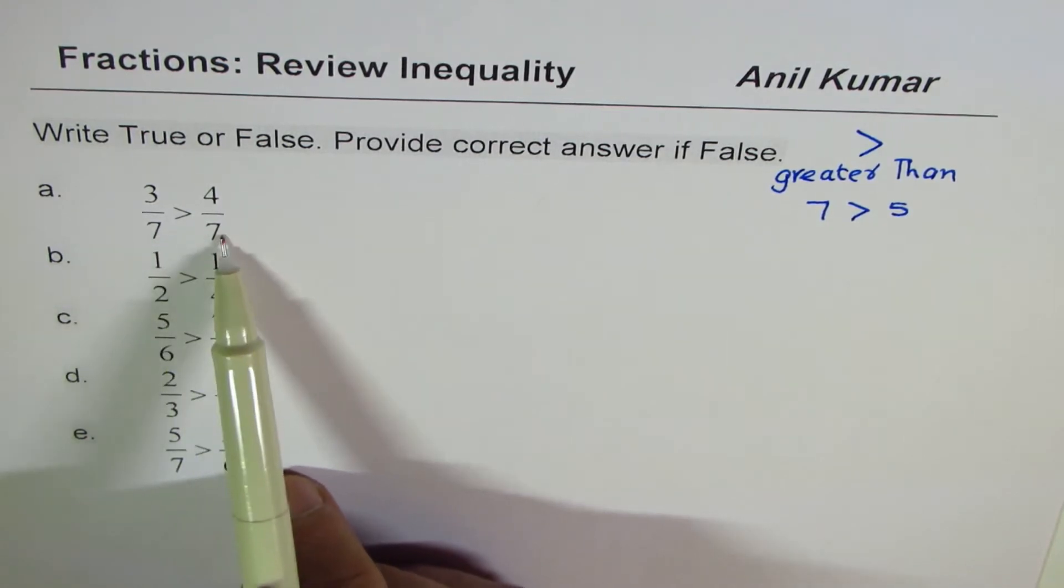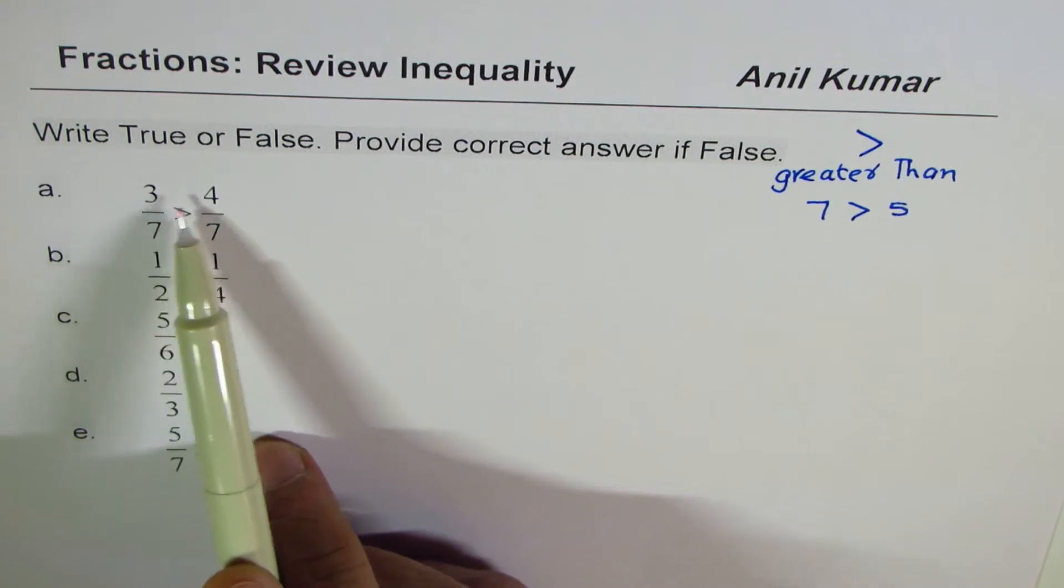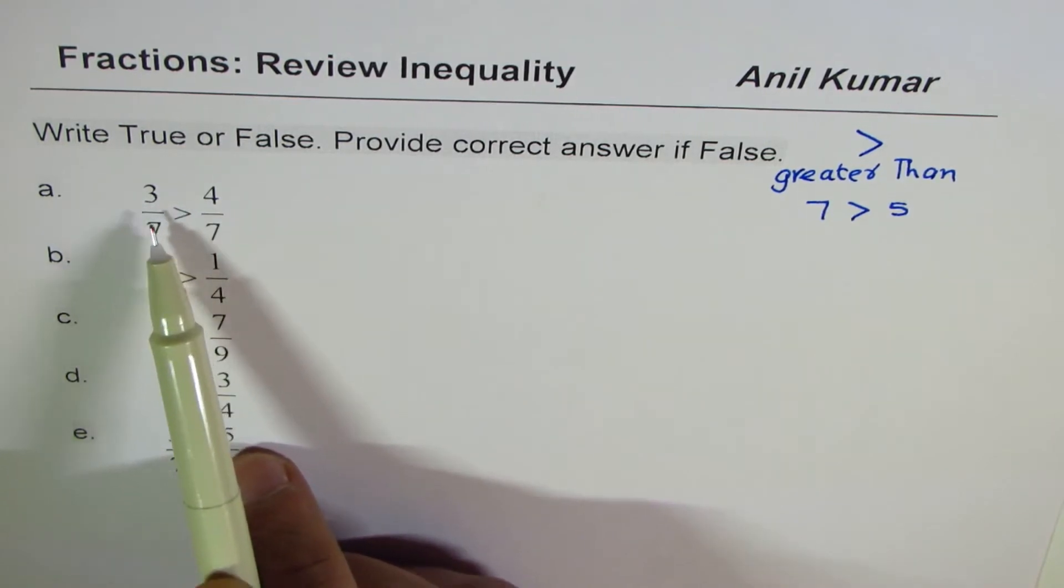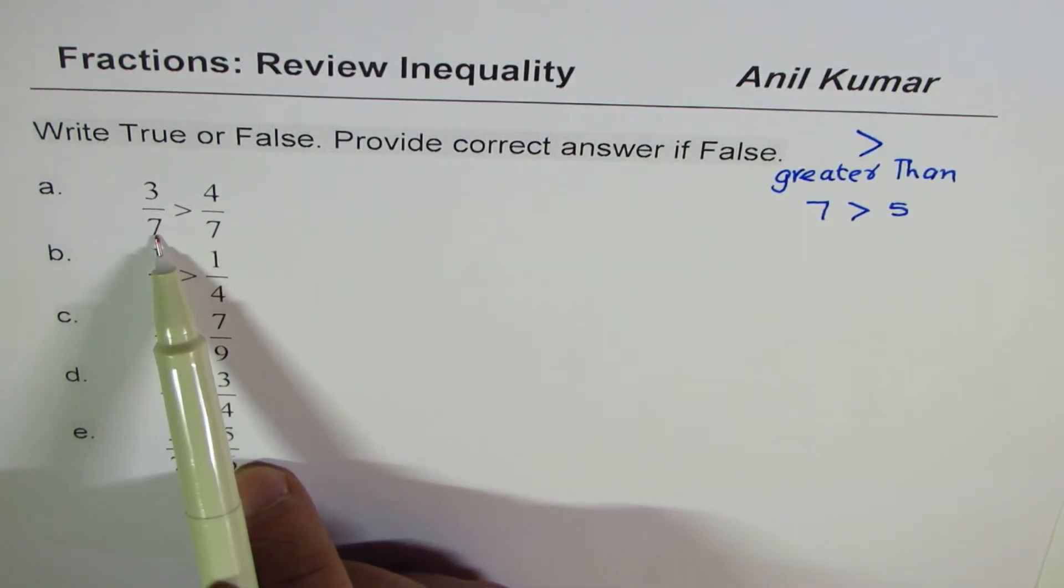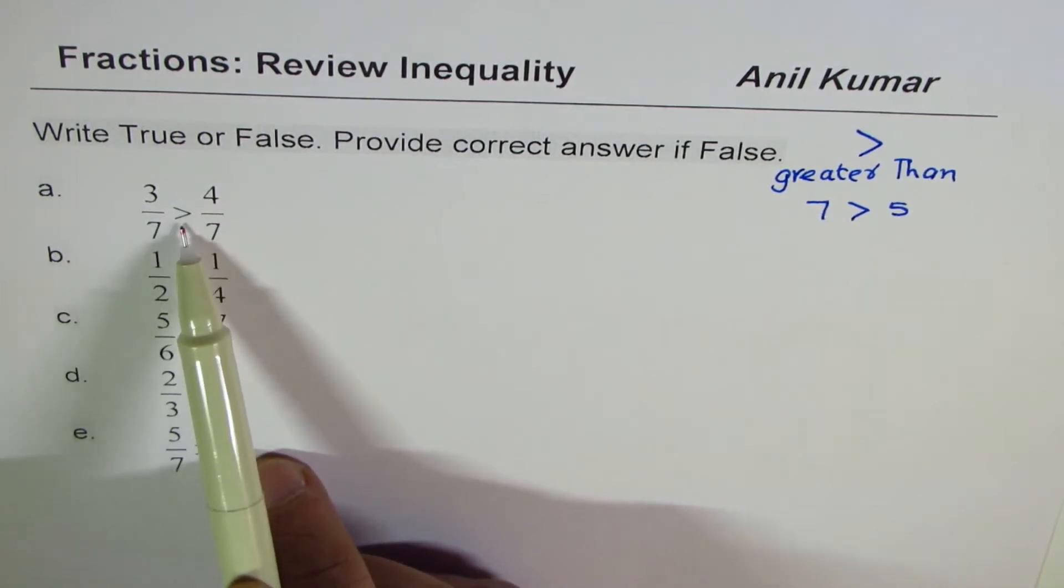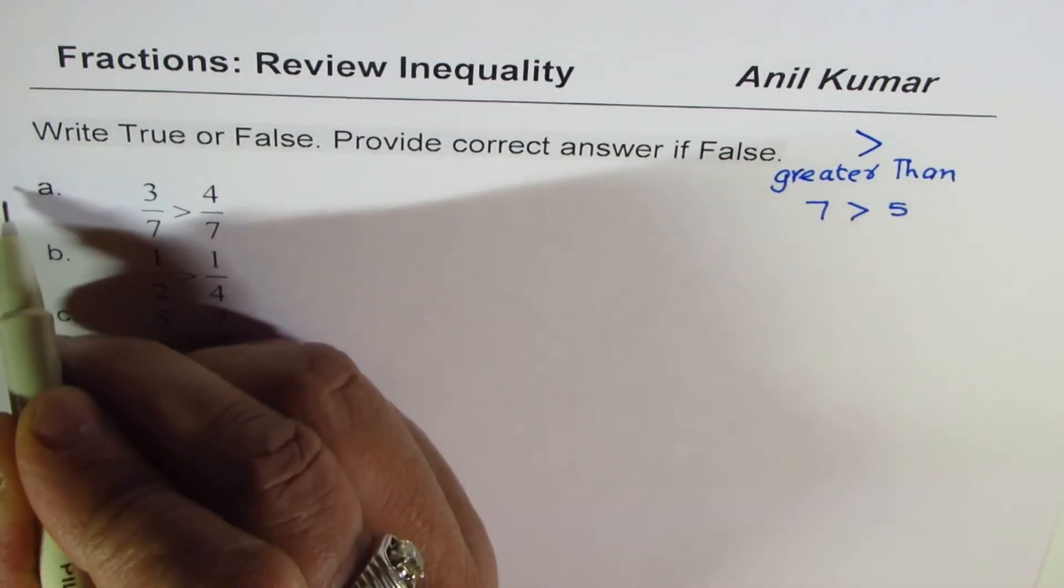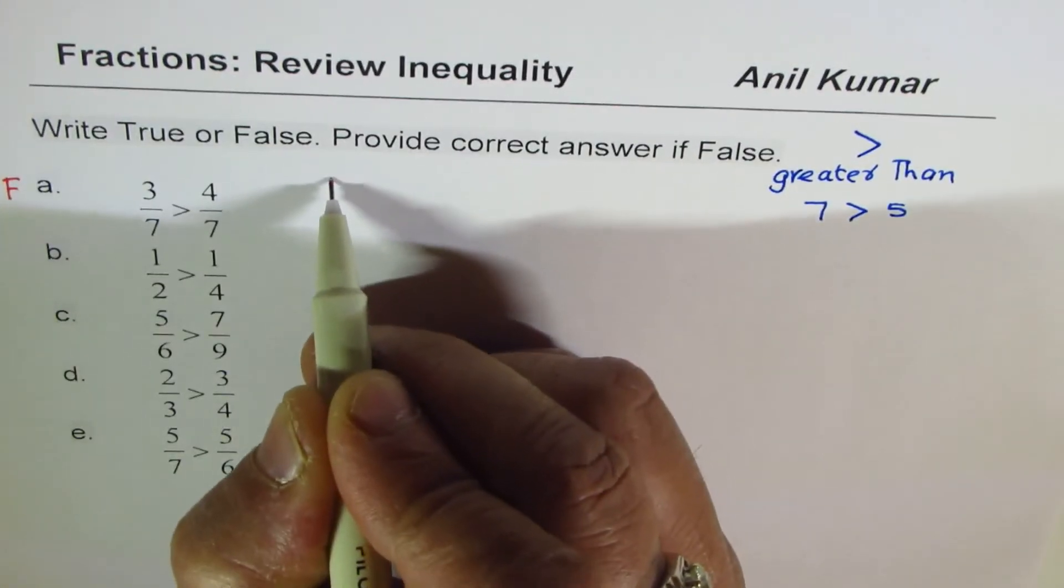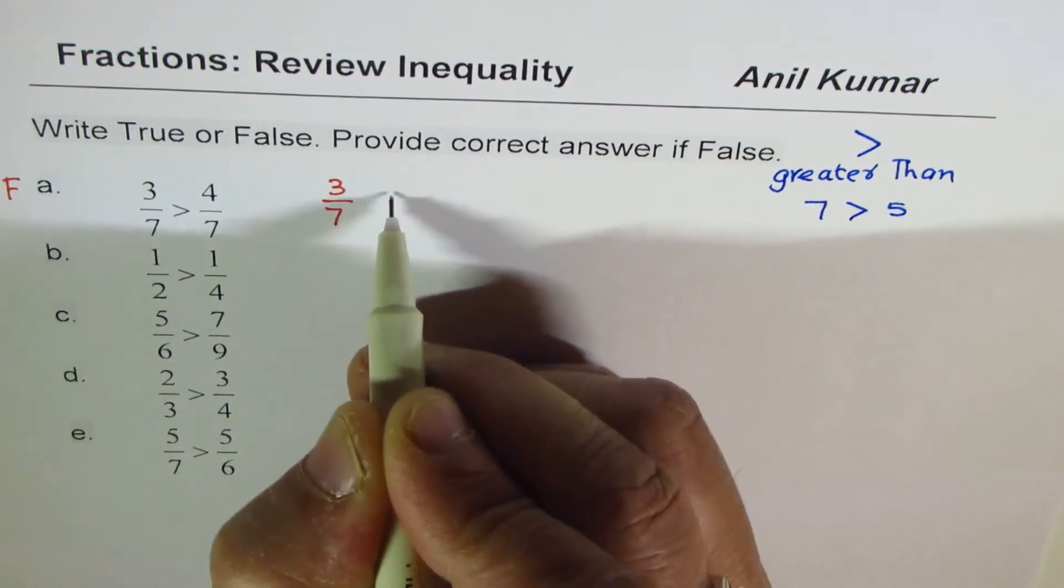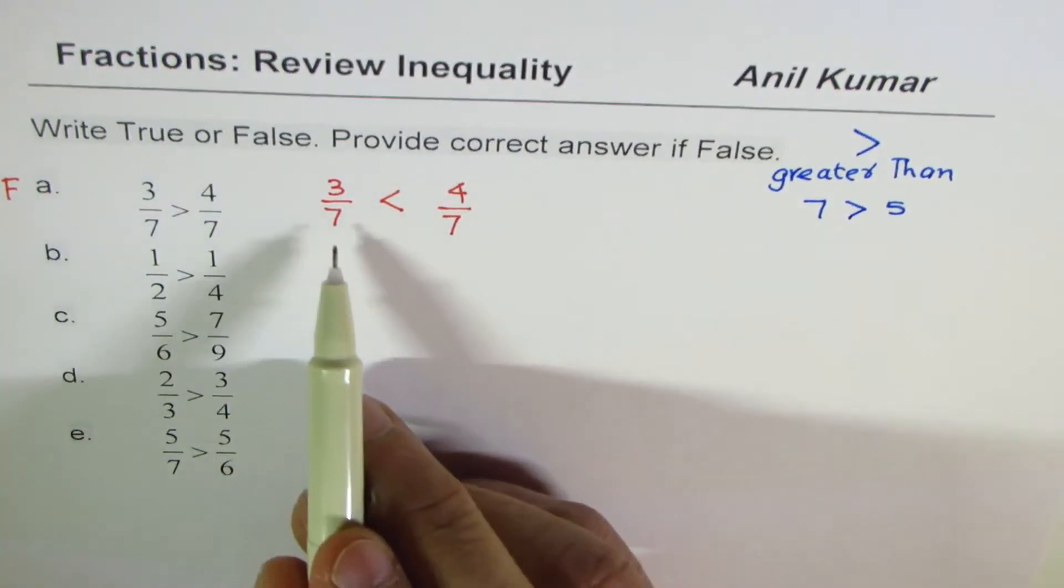We want 3 over 7 and 4 over 7. We want to check which is greater. Of course 4 is greater than 3, so here this is false. It should have been 3 over 7 is less than 4 over 7. So when we have the same denominator, we check the numerator to see which is greater. It's easy.